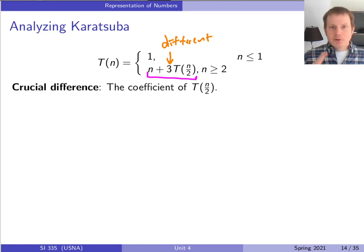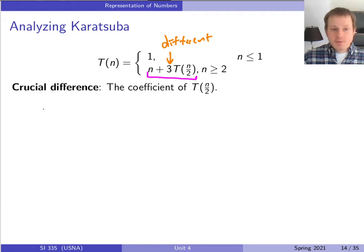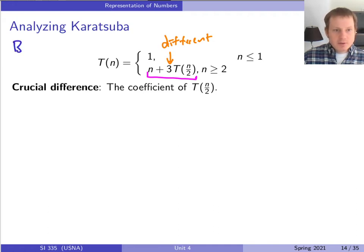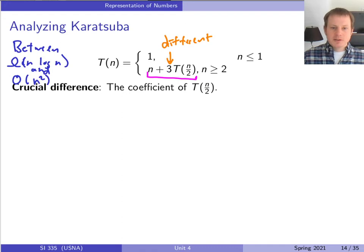Think back to one of the early puzzle problems about computing the max: I gave a bad algorithm that accidentally had two recursive calls, and it ended up being exponential time. Changing the number of recursive calls can have a huge effect on runtime. So before we even start the analysis, we know the answer should be between n log n — which is what it would be if the coefficient were 2, like merge sort, giving us Ω(n log n) — and n-squared, which is what we get when the coefficient is 4 like the naive divide-and-conquer multiplication.